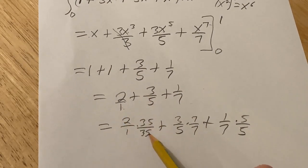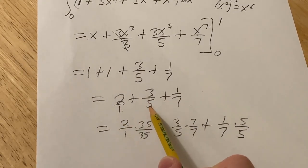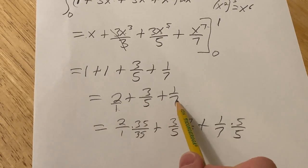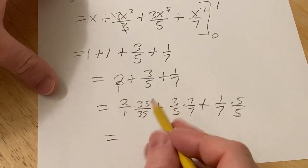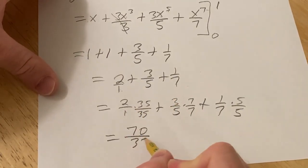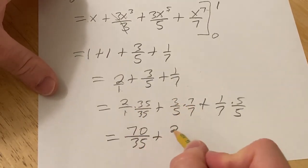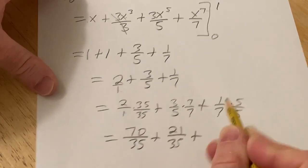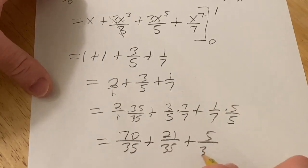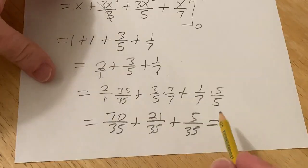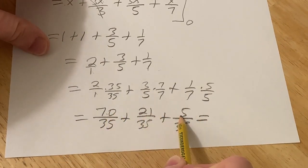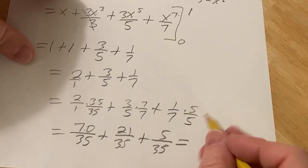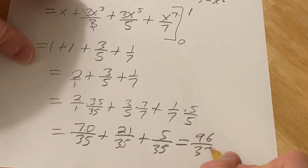So for this one there's a 1, so you multiply by 35 over 35. For this one there's a 5, so you multiply by 7 over 7. And for this one there's a 7, so you multiply by 5 over 5. This is equal to 2 times 35 is 70, 3 times 7 is 21, 1 times 5 is 5. So this gives you 70 plus 21 plus 5. So 91 plus 5 is 96 over 35.